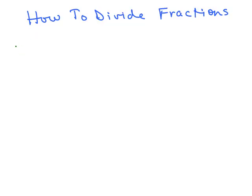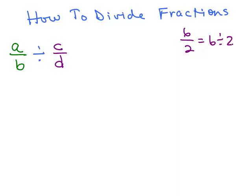So let's say you want to divide fractions. You have some fraction A over B divided by C over D. Remember, you can write a fraction — like if you have 6 over 2, that's the same thing as 6 divided by 2. So if I have this fraction divided by that fraction, it's really the same thing as A over B divided by C over D.